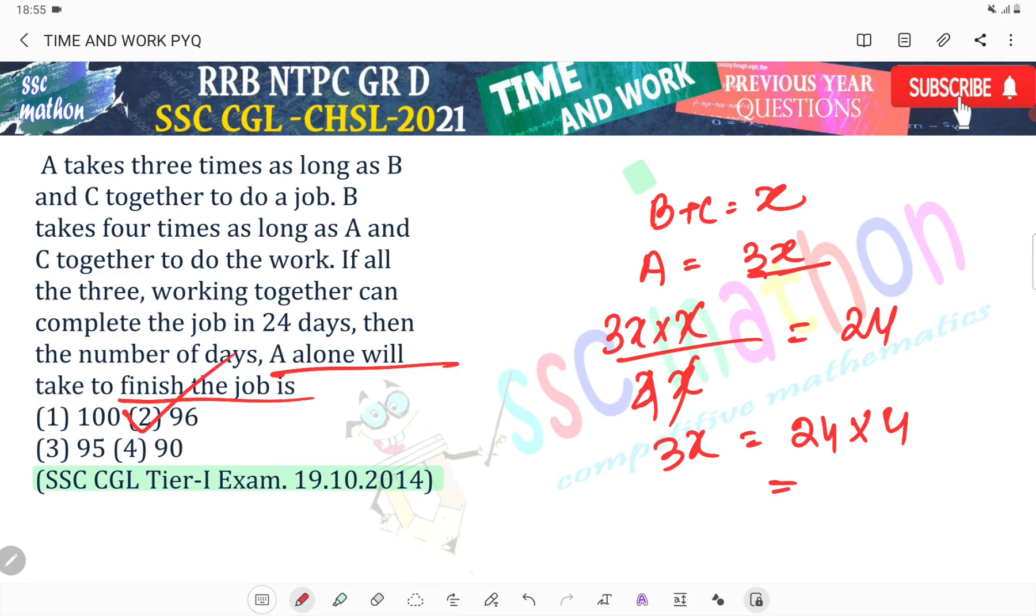A alone will take to finish the job: 3X equals 24, so 24 times 4 divided by 3 equals 96 days.